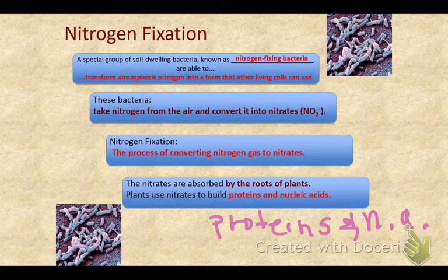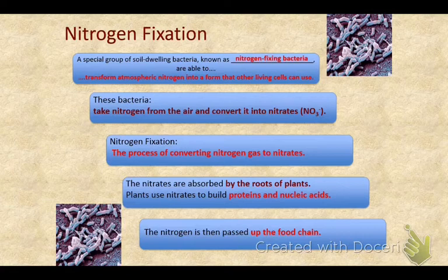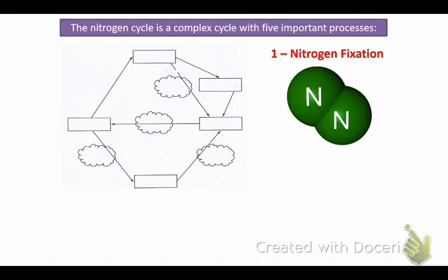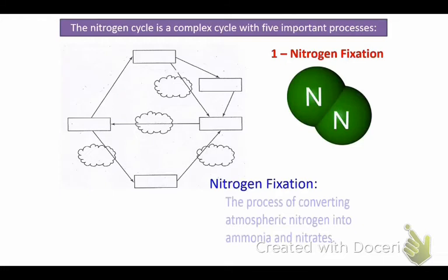Nitrogen is passed up the food chain, much like energy is passed up the food chain. The nitrogen cycle is a complex cycle with five important processes, the first one being nitrogen fixation — the process of converting atmospheric nitrogen into ammonia and nitrates.